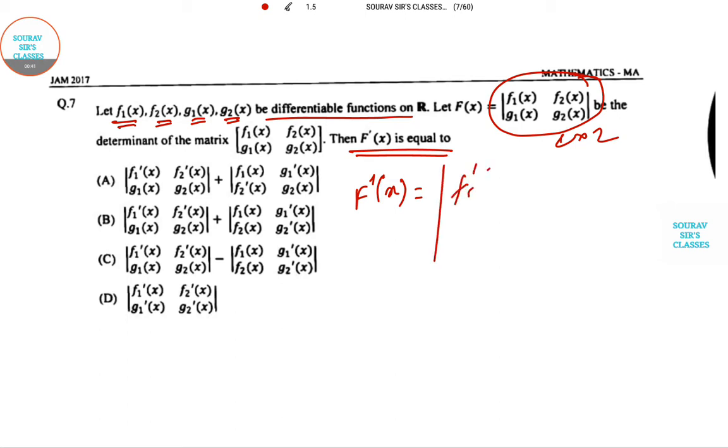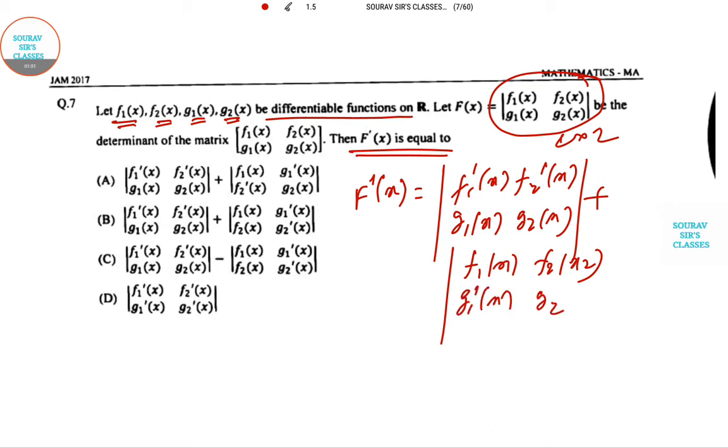So let me do that: F1 dash x, F2 dash x, G1(x), G2(x). You keep the first row changed and the second one changed, and then you change this row unchanged and you go for the derivative in the second one. That's it.